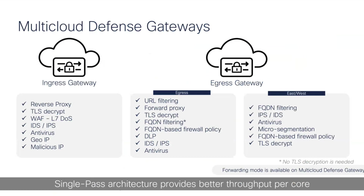Coming back to the gateways — gateways are provided as a platform as a service. You don't have to worry about lifecycle management because gateways are directly handled by the controller. These gateways are available in two, four, and eight vCPU instances. We have an ingress gateway for protecting inbound traffic to your cloud-hosted applications, and an egress gateway for use cases when your application needs to talk to the internet — for example, downloading patches or code. The egress gateway is also used for east-west traffic inspection.